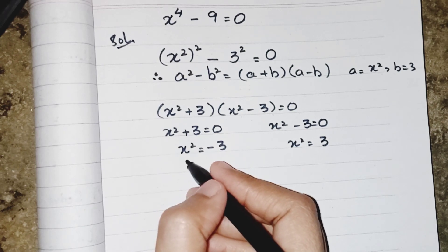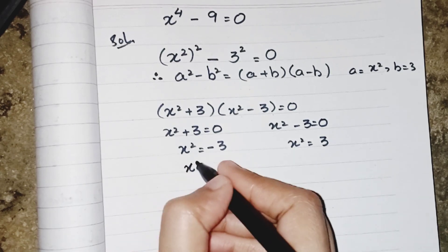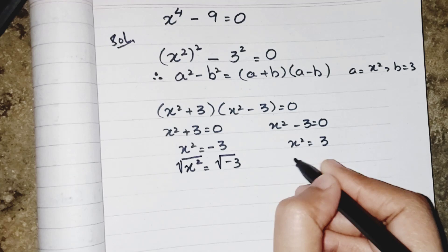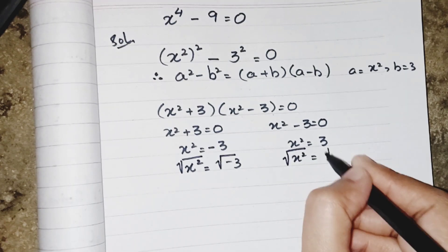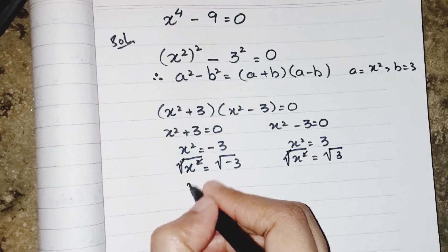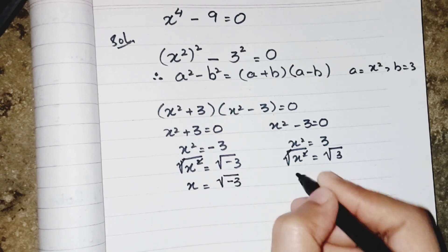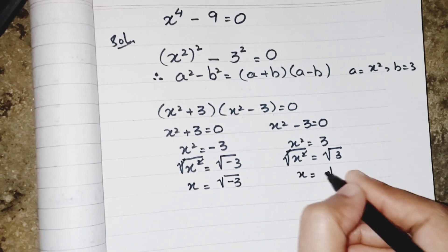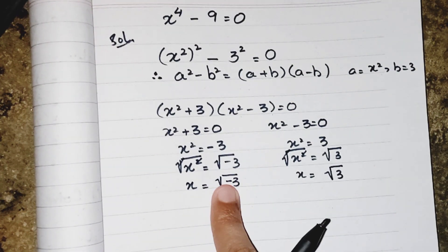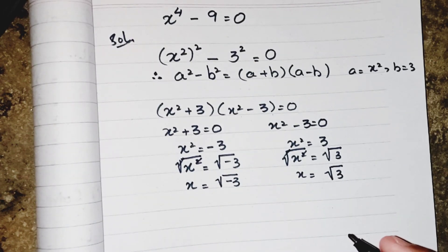Now over here I have to find the value of x. To remove the square I have to take the root on both sides. The square and root cancel each other out, so my answers are x equals minus √3 and x equals √3. I can also write minus √3 as √3 iota, which shows the negativity inside the root, but I am not writing it here as it is not needed.